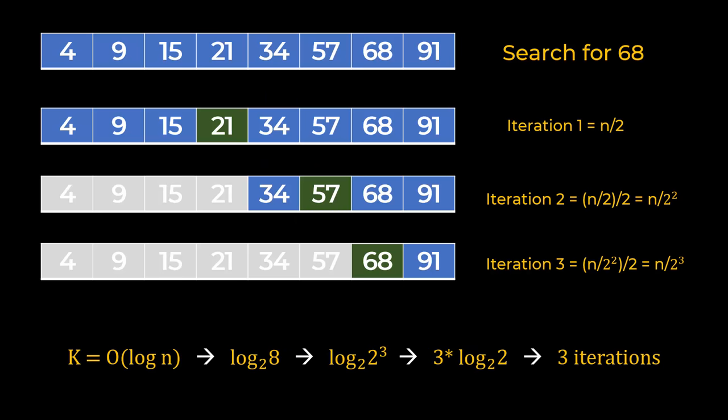Here I had 8 elements. So for 8 elements I can apply order of log n equation and it will be 8. You know it's 2 raised to 3. 3 comes ahead and log 2 to the base 2 becomes 1. Hence you find the answer that this is 3 iterations.